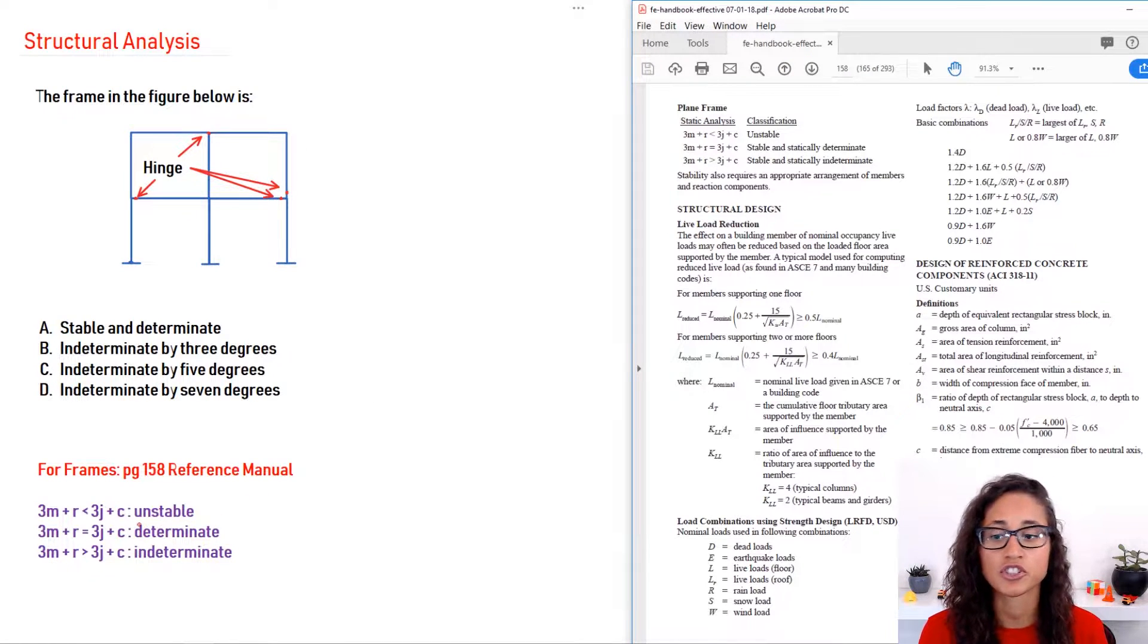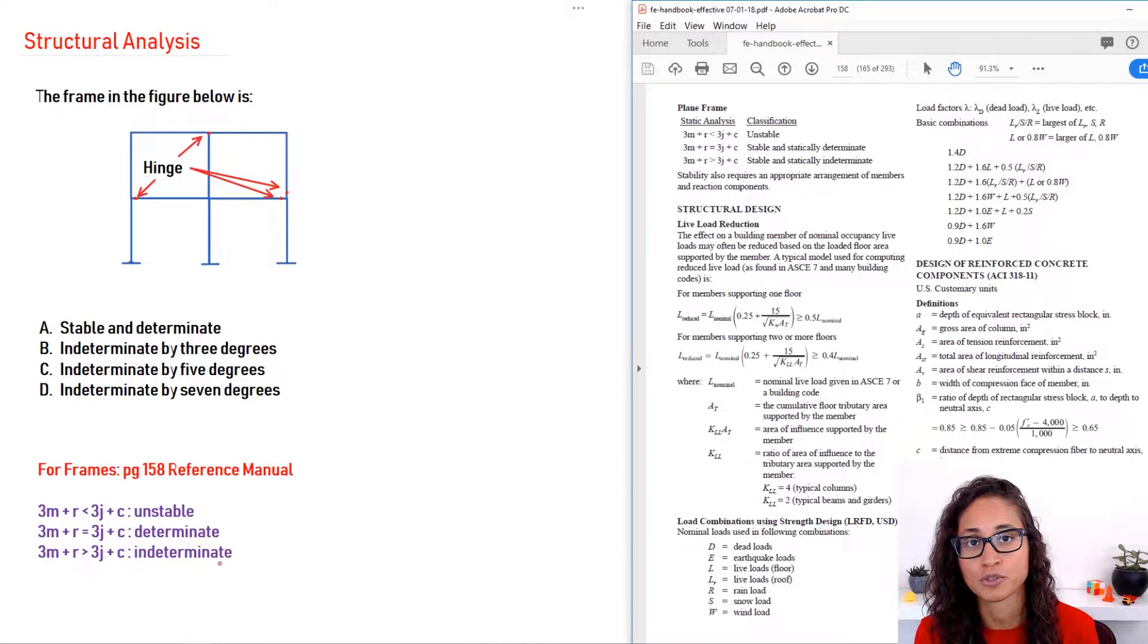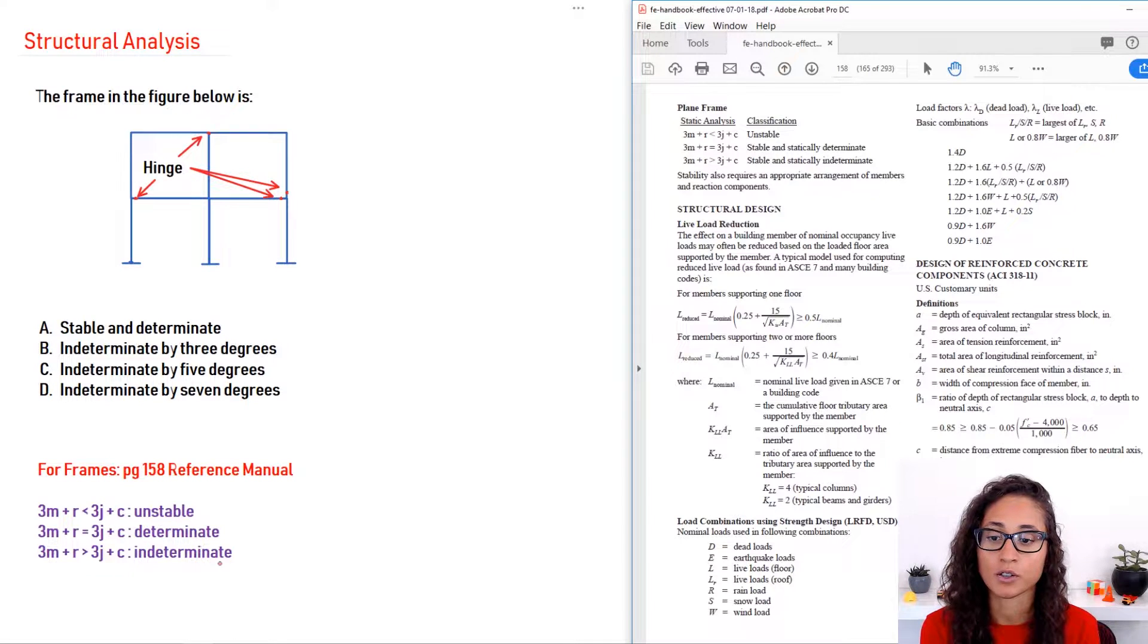If you have this condition, you have unstable. If you have this condition, you have determinate. And for this case, you have indeterminate. But for a lot of times, if it is indeterminate, you actually have to determine by how many degrees. So we'll go over that in a little bit as well.